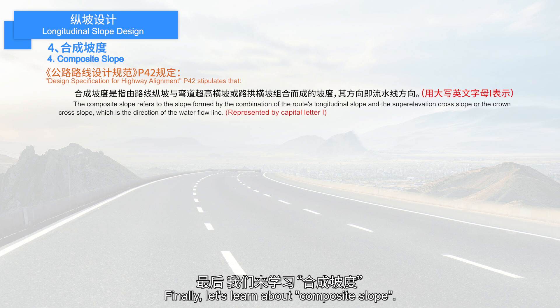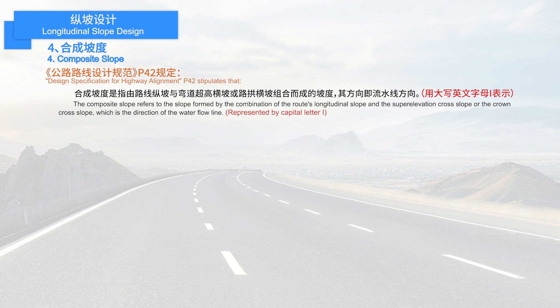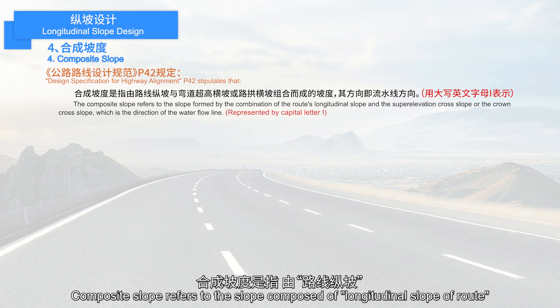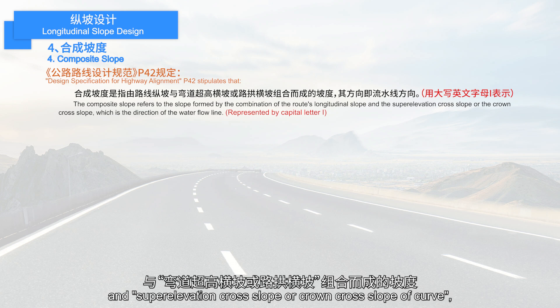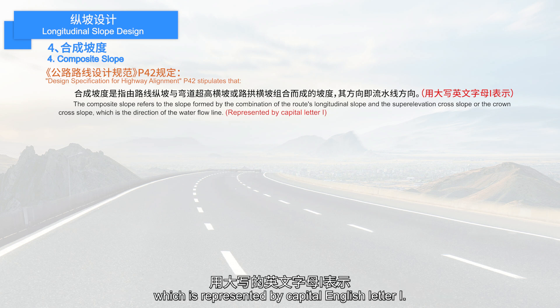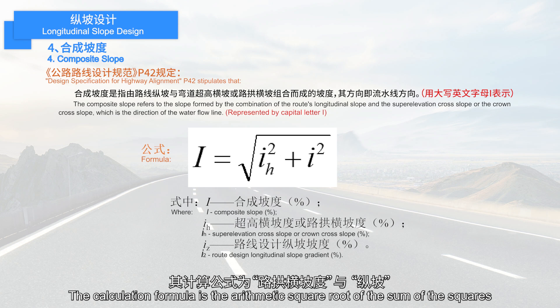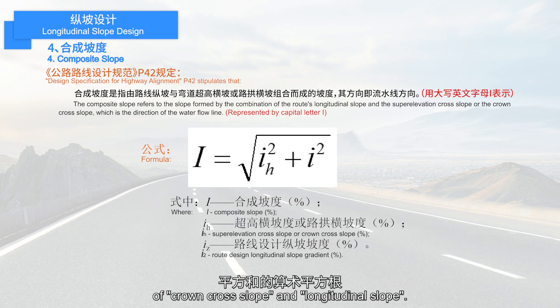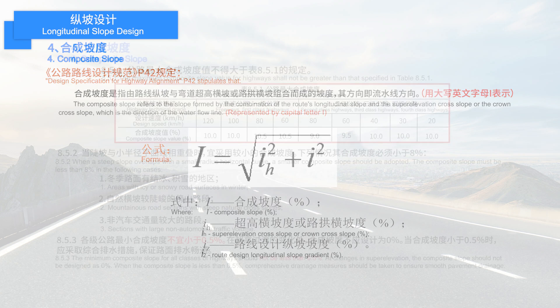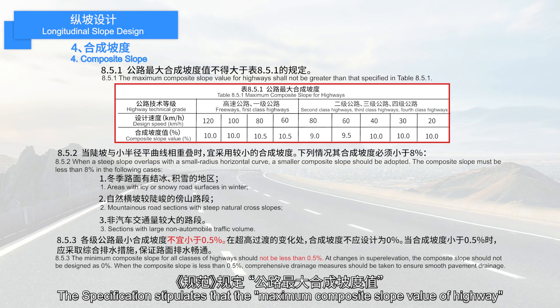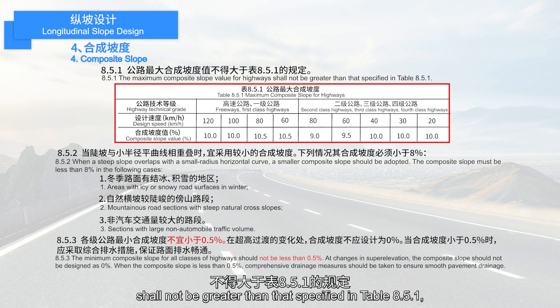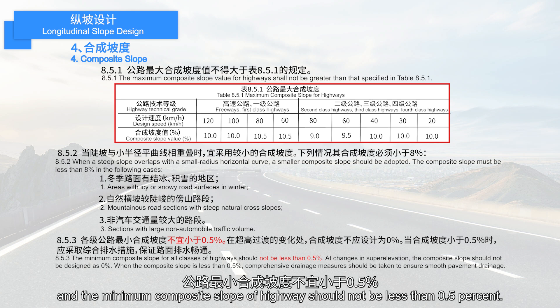Finally, let's learn about composite slope. Composite slope refers to the slope composed of the longitudinal slope of the road and the superelevation cross slope or crown cross slope of a curve, represented by the capital letter I. The calculation formula is the square root of the sum of the squares of the crown cross slope and the longitudinal slope. The specification stipulates that the maximum composite slope of a highway shall not be greater than that specified in Table 8.5.1, and the minimum composite slope should not be less than 0.5%.